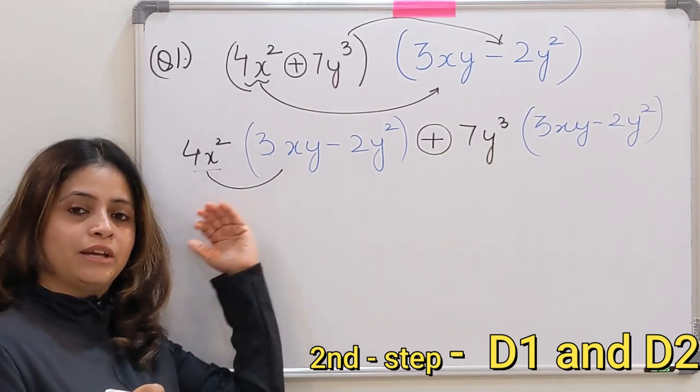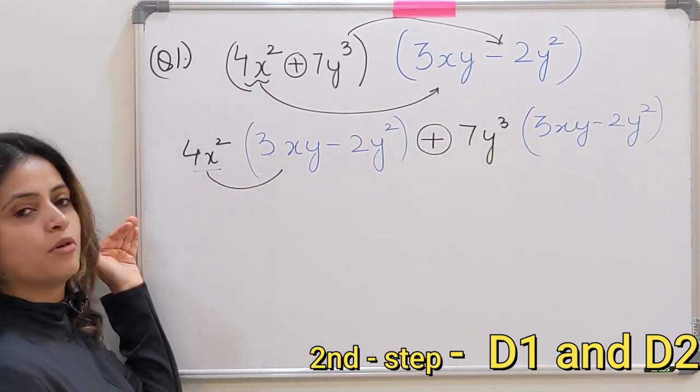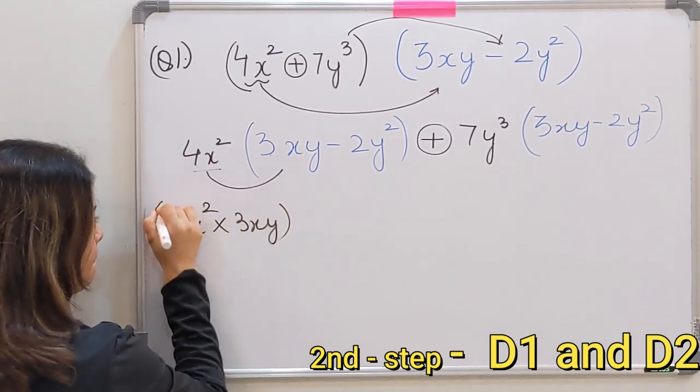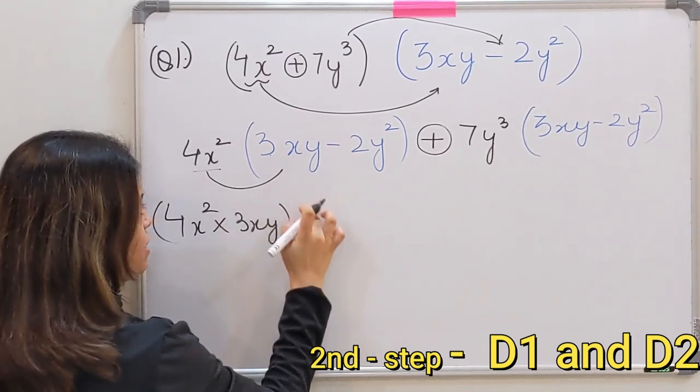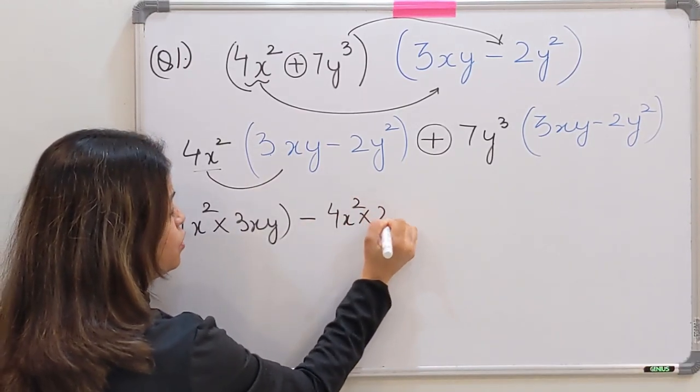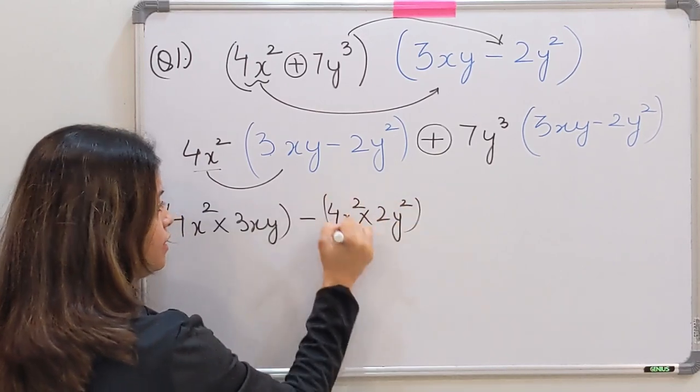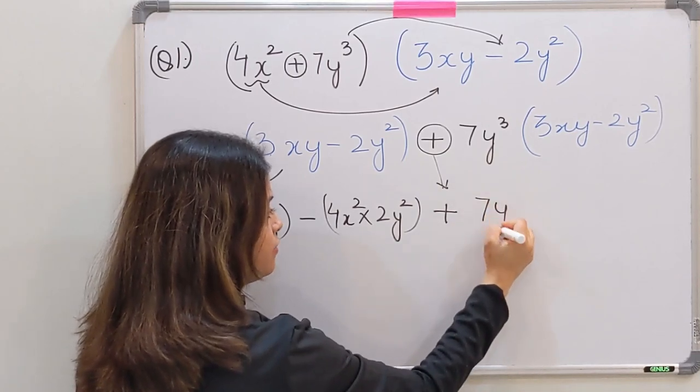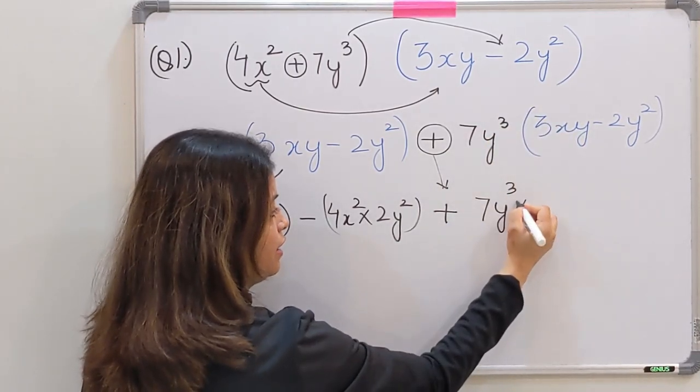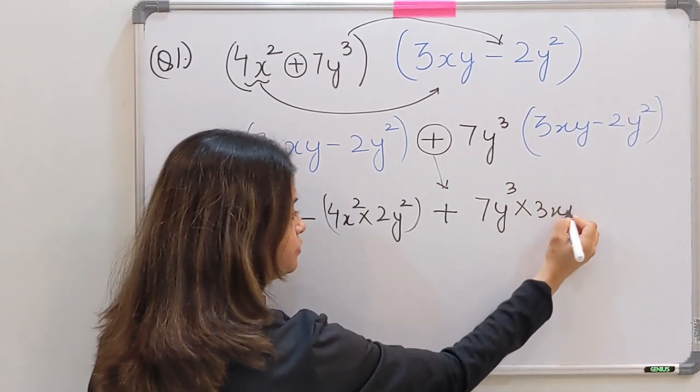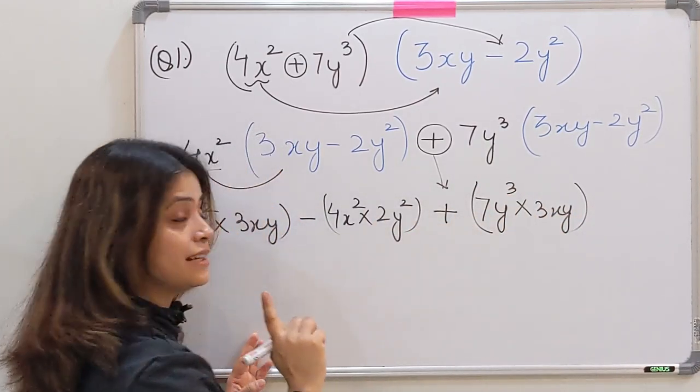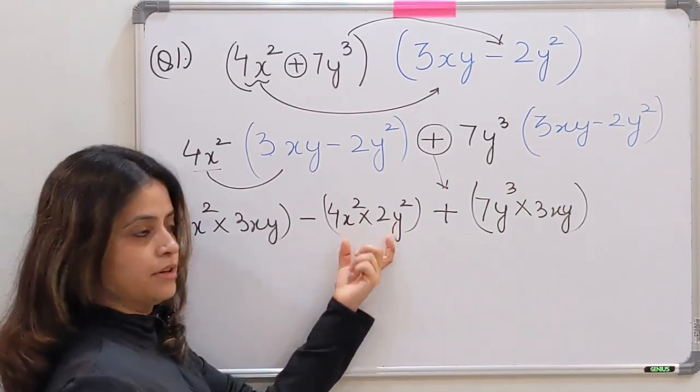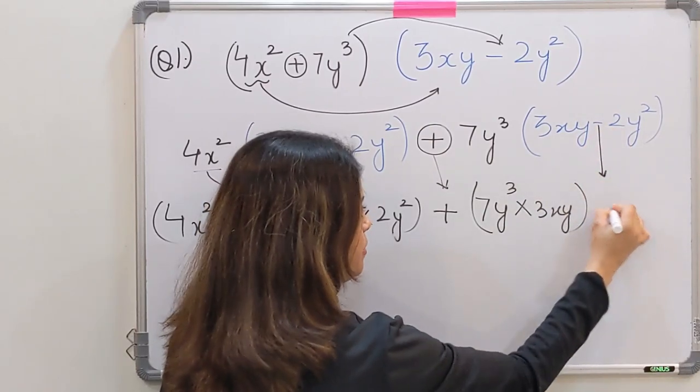Let me just write it down for you so that students who are not able to understand in one go can follow. 4x² into 3xy minus, this sign will come here, 4x² into 2y². Done with this step. Now the plus sign will come here. 7y³ multiply by 3xy bracket. Yes, the bracket is very very important. Bracket will indicate that you are multiplying these two terms together first.